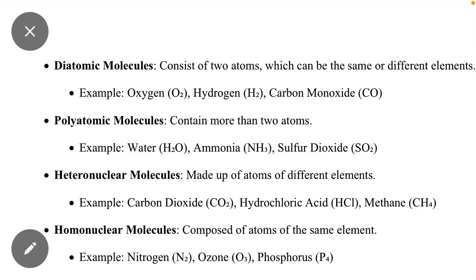In this video we will study the different types of molecules. First of all, we will study diatomic molecules. Diatomic molecules consist of two atoms which can be the same or different. For example, oxygen (O₂), hydrogen (H₂), and carbon monoxide (CO) are called diatomic molecules.